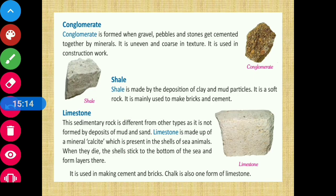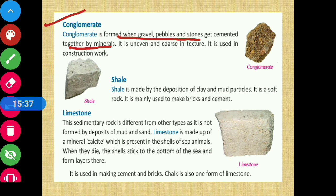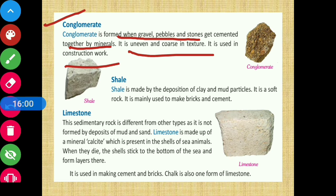Next is conglomerate. Conglomerate is formed when gravel, pebbles, and stones get cemented together by minerals. It is uneven and coarse in texture. It is used in construction work such as buildings and roads.